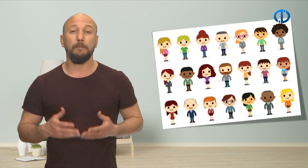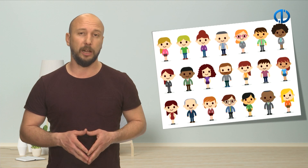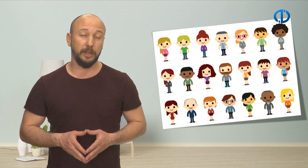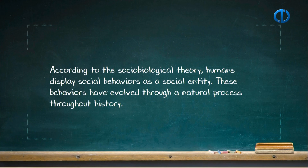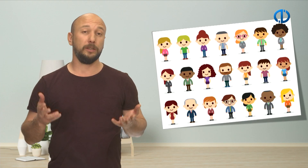In cognitive theories, mental processes such as perception, mentality, the methods of coding, recalling knowledge and experience gained, and thinking styles — also defined as cognitive elements — affect how physiological changes are shaped. According to the sociobiological theory, humans display social behaviors as a social entity. These behaviors have evolved through a natural process throughout history; while some behaviors have disappeared, some new behaviors have emerged. Emotions have also passed through similar stages, and such emotions help individuals to adapt themselves to the environment.